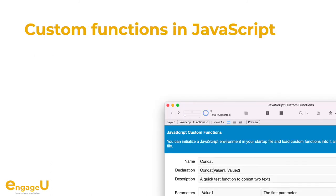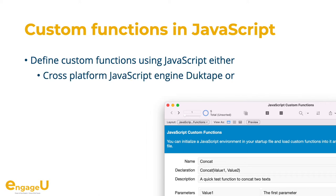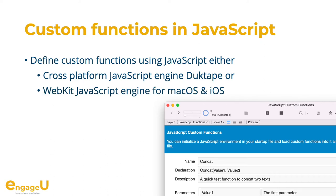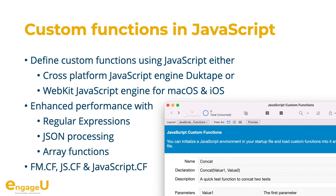We have custom functions defined in the plugin both as FileMaker calculations and JavaScript code. For JavaScript you can use either cross-platform the JavaScript.js functions with DukTape, or for macOS and iOS you can use WebKit's JavaScript engine. Use JavaScript to enhance performance with regular expressions, JSON processing and array functions. Check the fmcf function for custom FileMaker functions and the js.cf and javascript.cf functions for custom JavaScript functions.